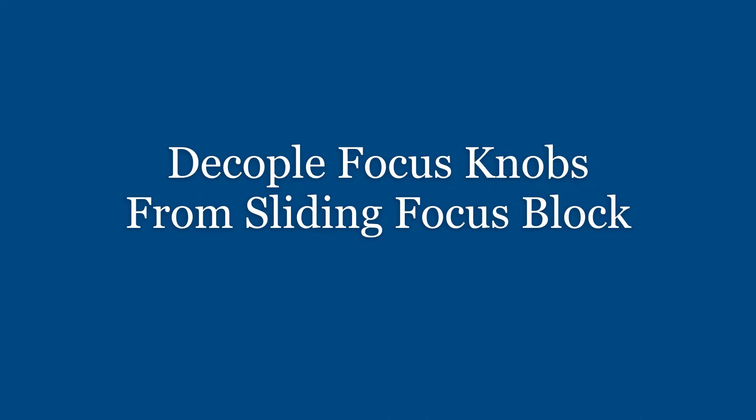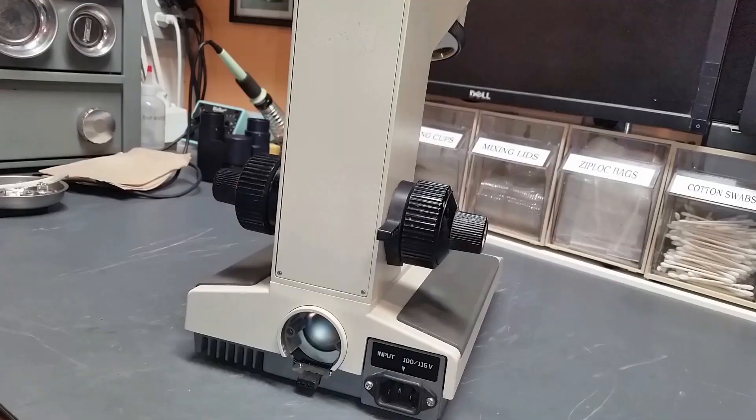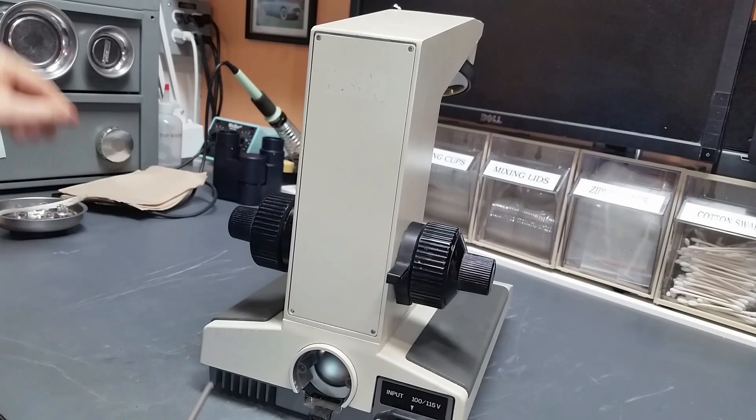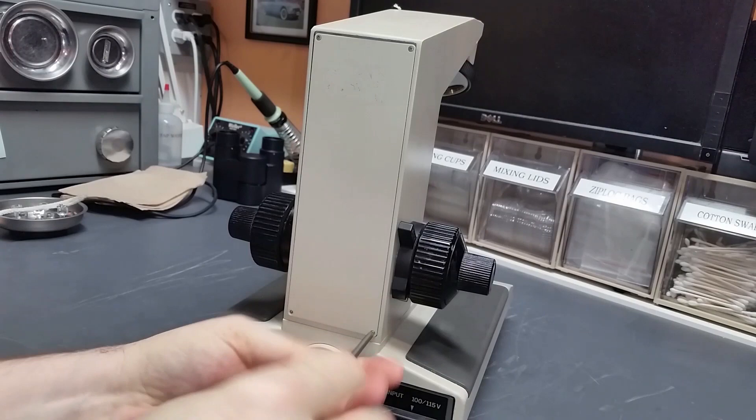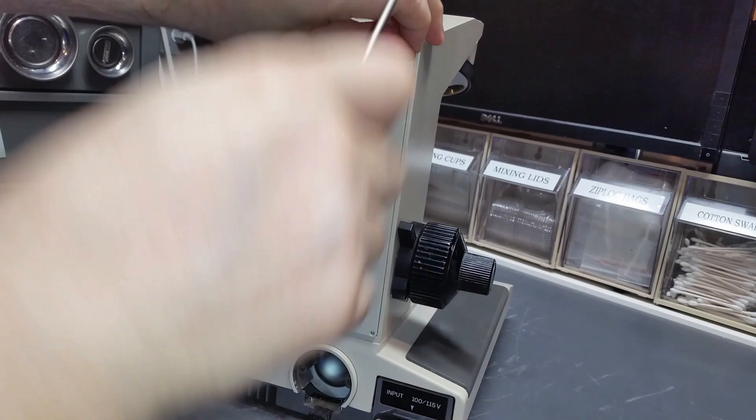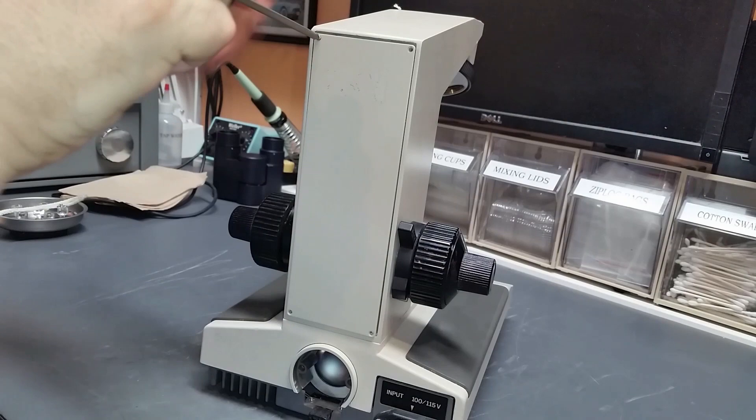Okay, what I'm going to do first, in order to evaluate what kind of condition this thing is in in terms of its maintenance, is I'm going to pull off these four little screws here, take the back cover off. The reason for doing that is because once I get this back cover off, that will expose a gearbox inside, and then I can pull that gearbox out, and at that point I'll be able to determine how stiff the coarse focus mechanism really is and how bad the sliding focus block is as well.